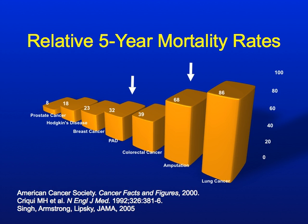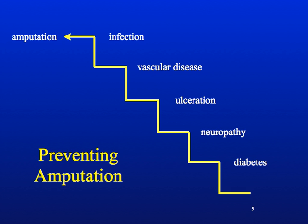Let's discuss preventing amputation and the targets for intervention. We know that if you can prevent neuropathy — there are currently no FDA-approved treatments to reverse diabetic neuropathy and bring back sensation — but if you can prevent neuropathy through tight glucose control or delay its onset, you can prevent the subsequent ulceration and infection, and in most cases, you can prevent the amputation.